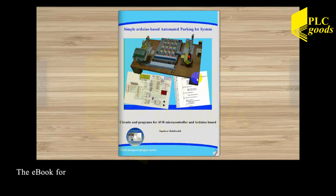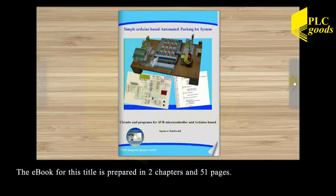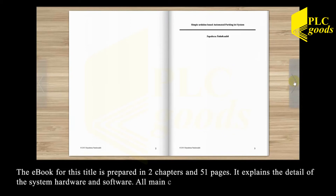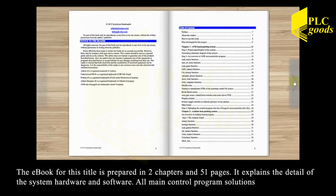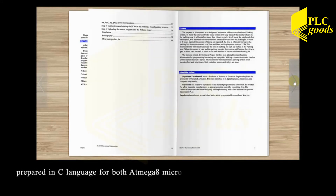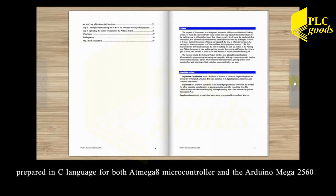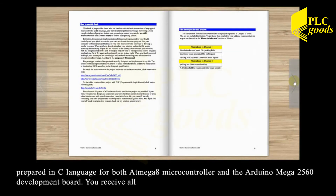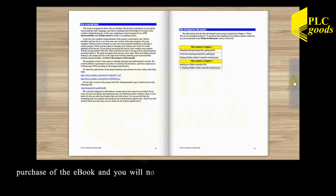The ebook for this title is prepared in two chapters and 51 pages. It explains the detail of the system hardware and software. All main control program solutions are prepared in C language for both the ATmega8 microcontroller and the Arduino Mega 2560 development board. You receive all the software solutions upon purchase of the ebook and will not need to develop any code to get the project running.